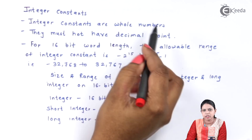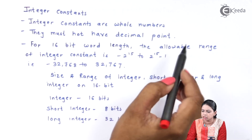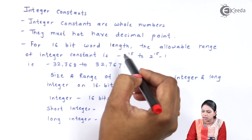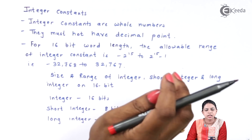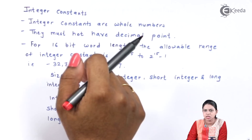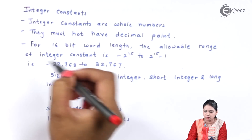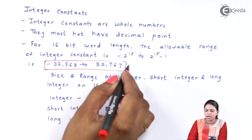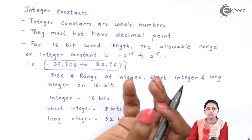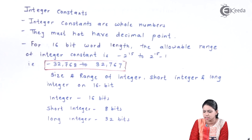Rule one: integer constants are whole numbers. Rule two: they must not have a decimal point. For a 16-bit word length, the allowable range of integer constant is minus 2 raised to 15 to plus 2 raised to 15 minus 1, that is minus 32,768 to plus 32,767. This is very important because this question may appear in fill-in-the-blank or general questions about the range of integer constant.